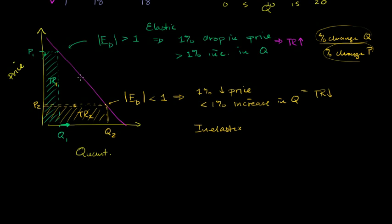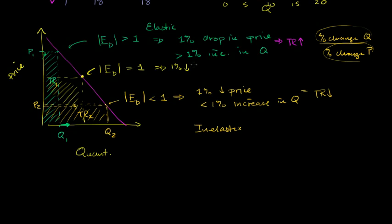Right when you're at unit elasticity, a 1% drop in price will result in exactly a 1% increase in quantity demanded. So they will kind of trade off and you won't get a noticeable change in your revenue. Many econ textbooks will tell you that you don't get a change in revenue. But if you actually do a detailed look at the math, the absolute value of the price elasticity of demand at that point is 1, which tells us that a 1% drop in price goes along with a 1% increase in quantity.